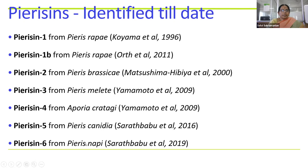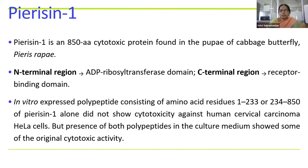Pyresin 5 is from Pieris canidia and pyresin 6 from Pieris napi. Our butterflies were obtained from the northeastern region because it is a collaborative project with Mizoram University. So butterflies obtained from the northeastern region were used for isolating pyresin 5 and 6. We will see the nature of each pyresin one by one.